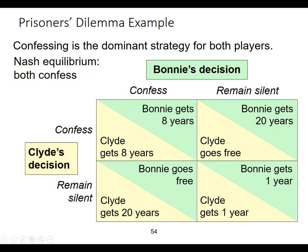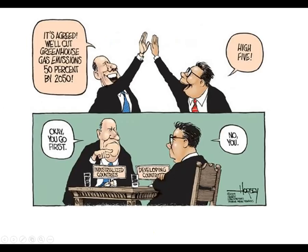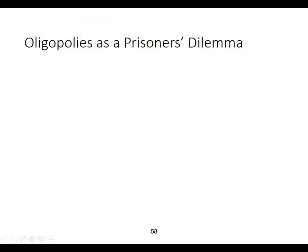The Nash equilibrium is where we've circled both of those outcomes. Here's another version of this — industrialized countries versus developing countries. Their two options are to cut greenhouse emissions, but neither of them wants to go first because the player that goes first is going to lose profitability. This is one of the problems in environmental economics.